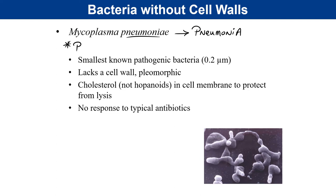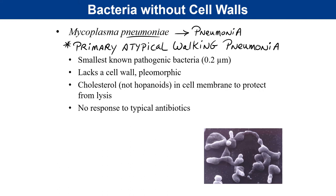A more thorough description of the disease caused by Mycoplasma pneumoniae is primary atypical walking pneumonia. Primary means no other cause of fluid buildup in the lungs is necessary beyond mycoplasma itself. Atypical contrasts with typical causes like Streptococcus pneumoniae, Klebsiella pneumoniae, or viral pneumonia. Atypically, pneumonia can arise from mycoplasma infection.